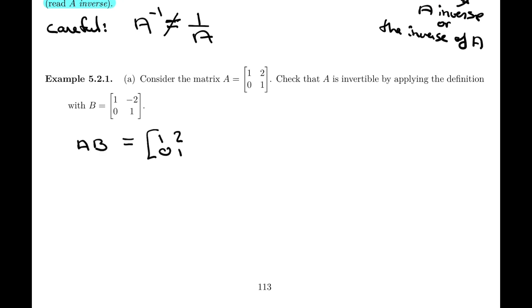So AB is [1, 2, 0, 1] times [1, -2, 0, 1]. So matrix multiplication. By now, I think we pretty much have the hang of this. So first row times first column, 1 times 1, 2 times 0 equals 1. And of course, we could do the same thing with first row times second column. And 1 times negative 2, 2 times 1. We add negative 2 plus 2 equals 0. And so forth. And if you do the rest of the matrix, you'll get 0 and 1. In other words, the identity matrix.